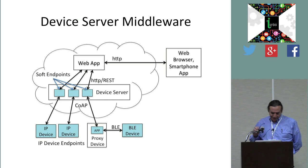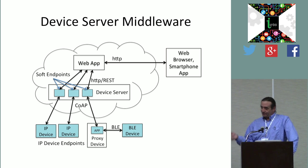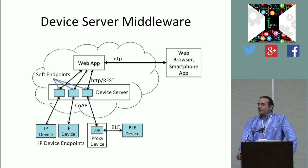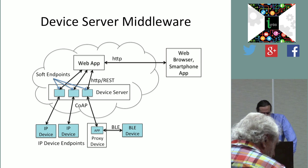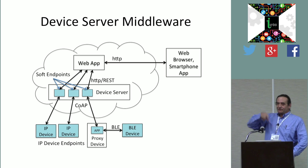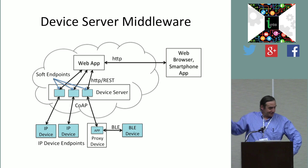The example here is based on the pattern for Lightweight M2M. We have a couple of IP protocol connected devices, a Bluetooth Low Energy device that connects via proxy to a smartphone or set-top box that has both Bluetooth radio and an IP network connection. The device server is a layer of software - shown here in the cloud, but there could be a local or cloud instance. Soft endpoints are representations of what's on the device that the server maintains for applications to interact with. A web browser or smartphone app will interact with the web app, which receives notifications from sensors, updates actuators, and creates notifications for unusual events.